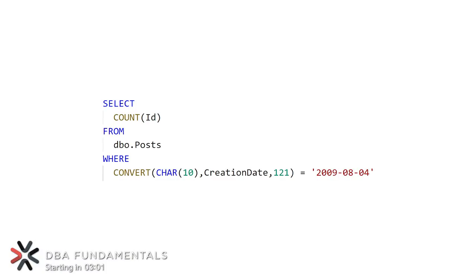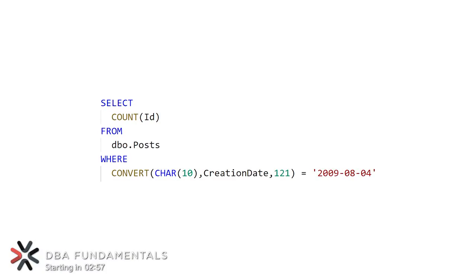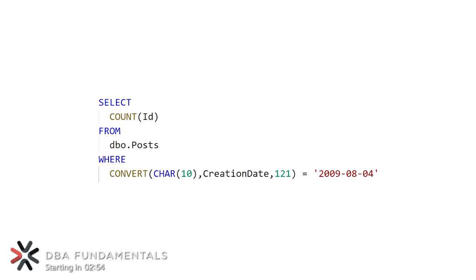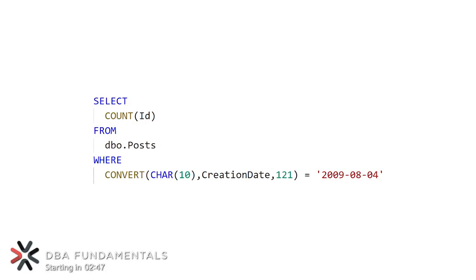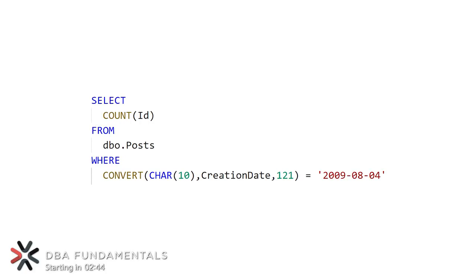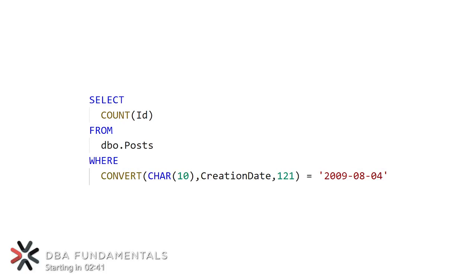To get a better idea of what makes a query Sargeable, let's look at this example. In this query, we're trying to get a count of all the rows where the CreationDate column is set to a value on August 4th, 2009. Our first attempt at this is converting our DateTime column on our table to be a character string of just the date portion so that it matches what we're writing on the right side of the equal sign.